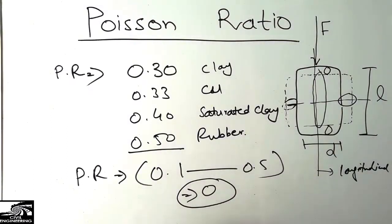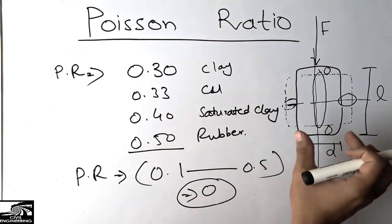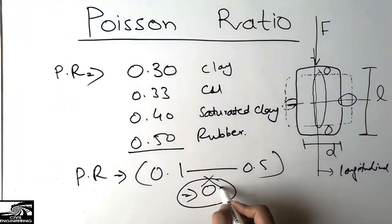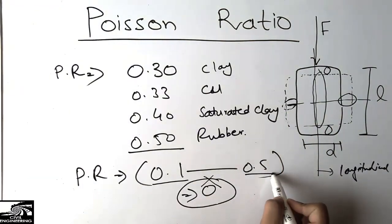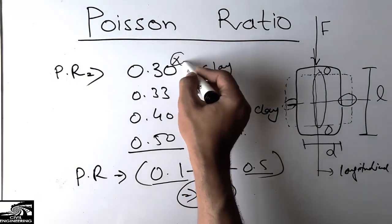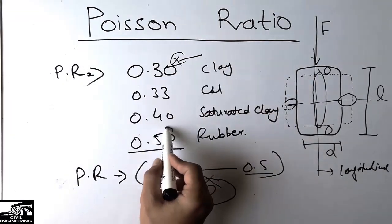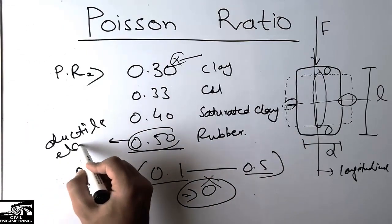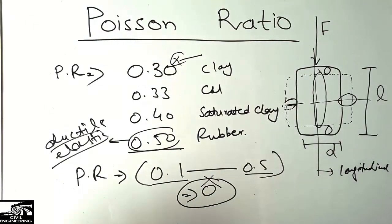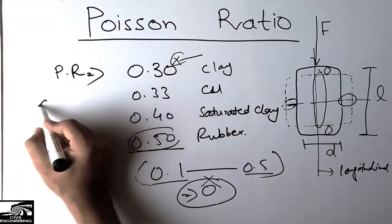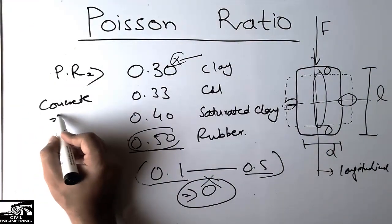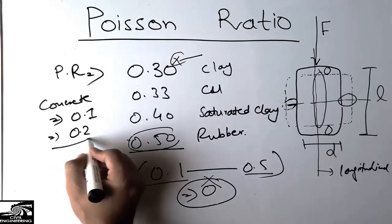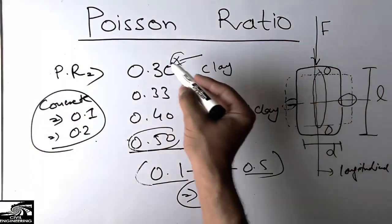Generally, the Poisson ratio ranges from 0.1 to 0.5. It can never be 0, because a Poisson ratio of 0 would mean there is no lateral change — that would be an ideal material. A lower Poisson ratio indicates less ductility and less elasticity, while a higher Poisson ratio indicates a more ductile and elastic material. High-strength concrete has a Poisson ratio of 0.10, while low-strength concrete has a Poisson ratio of 0.20.